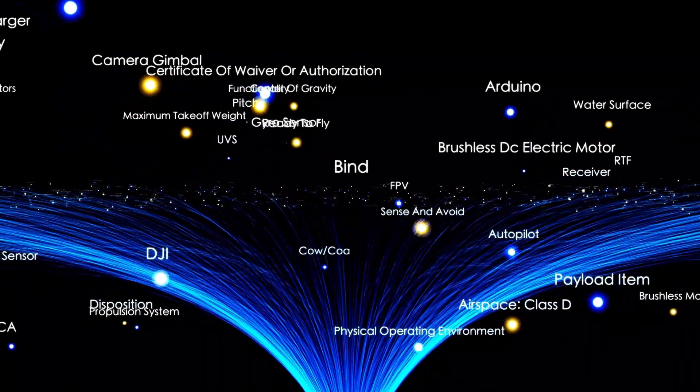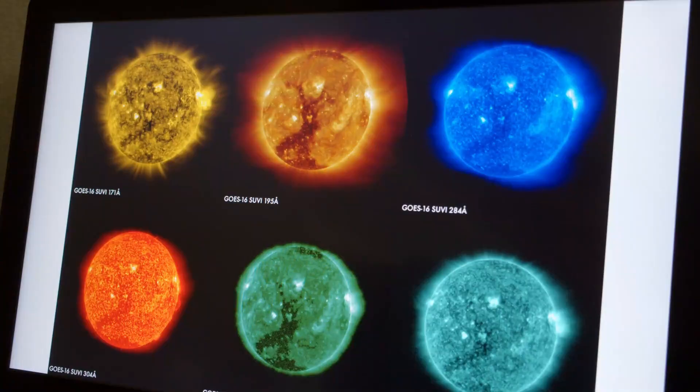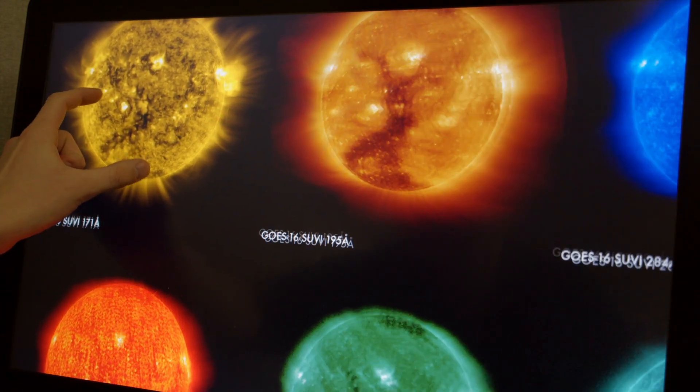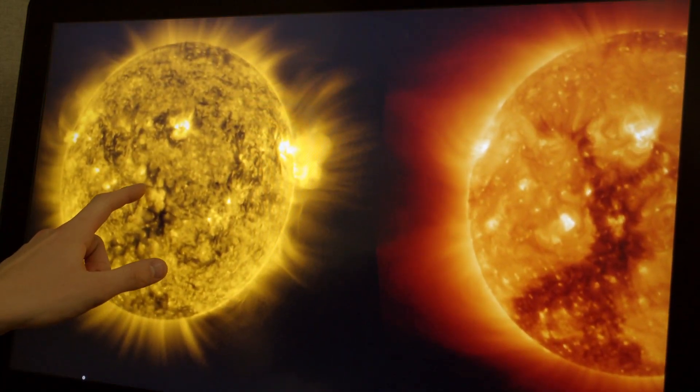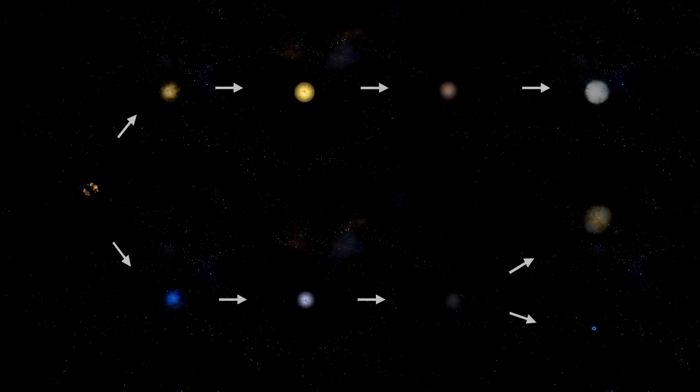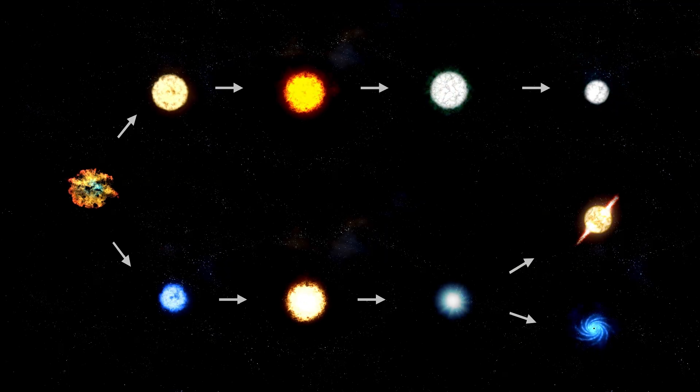Classified as a red supergiant, Betelgeuse is in the final stages of its stellar life cycle. Positioned roughly 642 light-years from Earth, it ranks among the largest and brightest stars in the Milky Way galaxy, boasting a radius nearly 700 times that of the Sun and shining with a luminosity over 10,000 times greater.